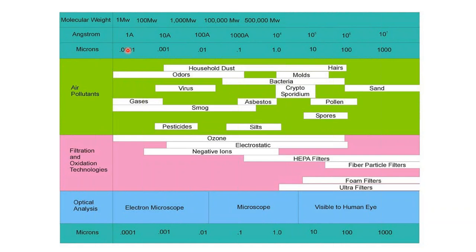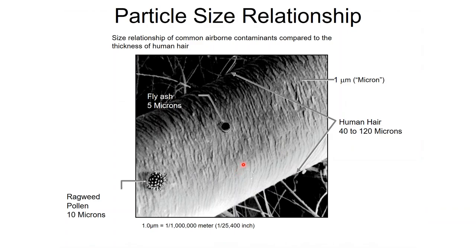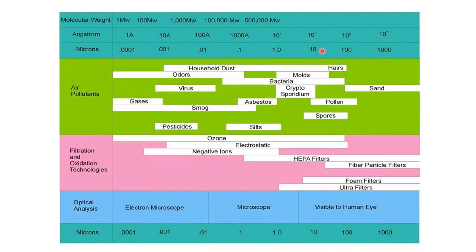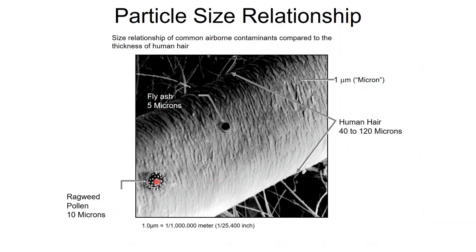We'll come back to this particle size chart throughout the presentation. Viruses are significantly smaller than bacteria and mold, so they'll be the hardest to deal with. Visually: a human hair is 40-120 microns wide. Pollen and some spores are around 10 microns. A virus would essentially be invisible even under that level of magnification — that's how small we're talking.